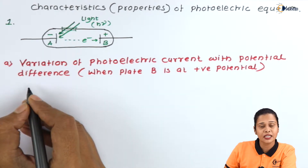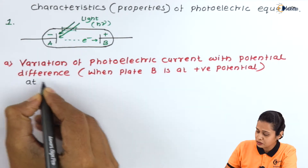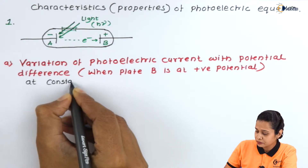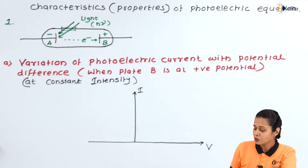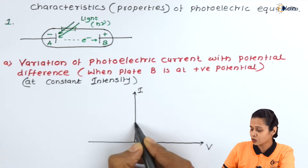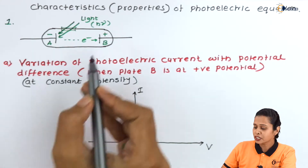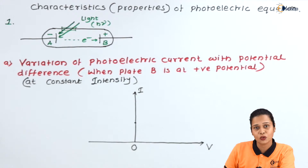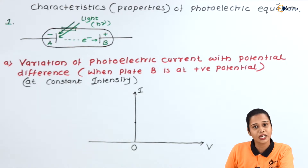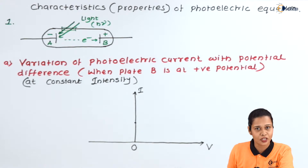At this point, keeping intensity constant. When we start this experiment, we observe that at zero potential, there is a very small amount of current. This current exists because of the high kinetic energy of the electrons. Even if the potential of metal plate B is zero, when electrons move from the surface, they acquire a very high velocity. That is why some electrons will collide on metal plate B and current flows through the circuit.